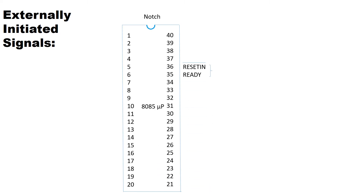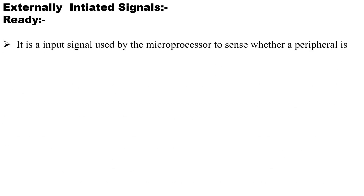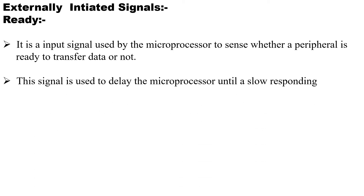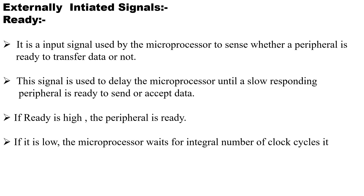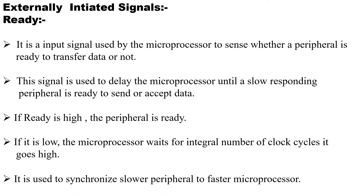The three signals that come under externally initiated are READY, RESET IN, and RESET OUT. The pin READY plays a very important role in the 8085 microprocessor. It is an input signal used by the microprocessor to sense whether the peripheral is ready to transfer data or not. This signal is used to delay the microprocessor until a slow responding peripheral is ready to send or accept data. If READY is high, the peripherals are ready for data transfer, and if it is low, the microprocessor waits for an integral number of clock pulses until it goes high. It is used to synchronize the slower peripherals to the faster processor.